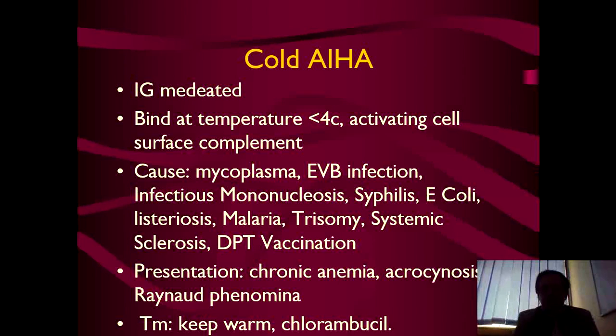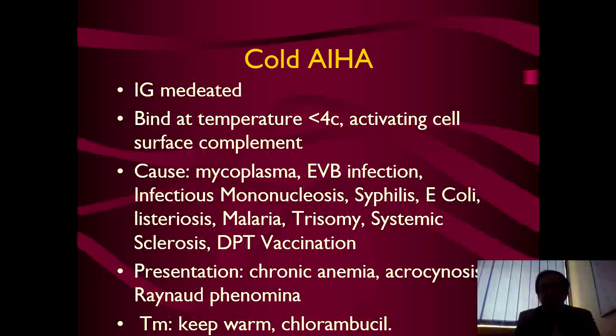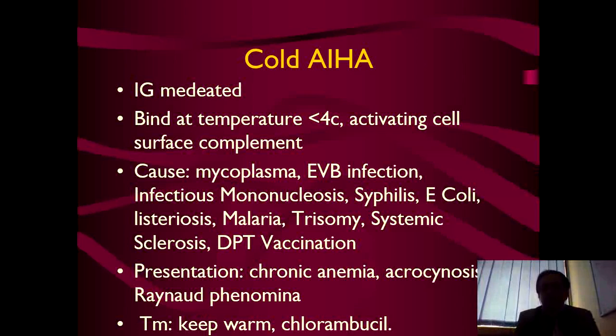After DPT vaccination you should check the peripheral picture to rule out hemolysis. These patients present with chronic anemia and acrocyanosis — the peripheral parts of the body have cyanosis — and the patient may have Raynaud's phenomenon, with color changes of the hands in cold water or cold weather. Treatment is to keep the body parts warm, and the drug of choice is chlorambucil in cold autoimmune hemolytic anemia.